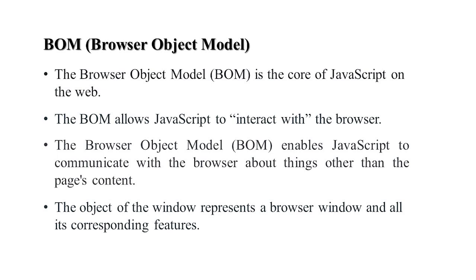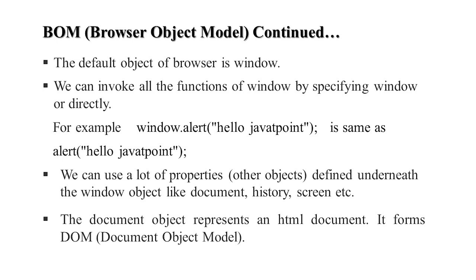The object of the window represents the browser window and its corresponding features. The default object of the browser is window. We can invoke window functions by specifying window.window or directly. For example, window.alert('Hello JavaScript') is the same as alert('Hello JavaScript'). There are a number of properties defined under the window object, like document, history, screen, and navigator.